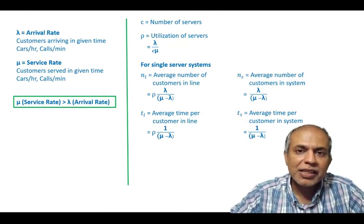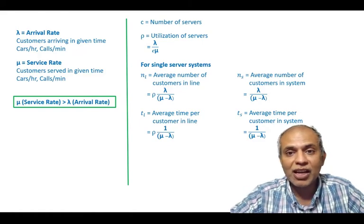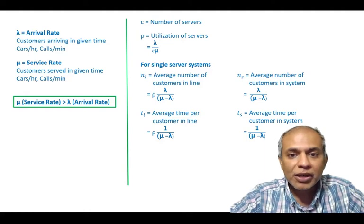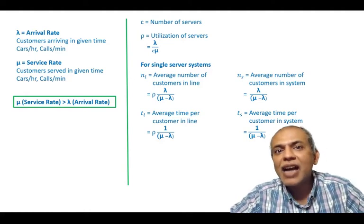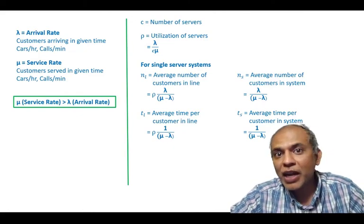Remember here the time is from the interest of the customers because they do not want to spend a lot of time in the system or in the line. And the number is from the perspective of the service provider because they need to design facilities to accommodate the number of customers that are going to wait.